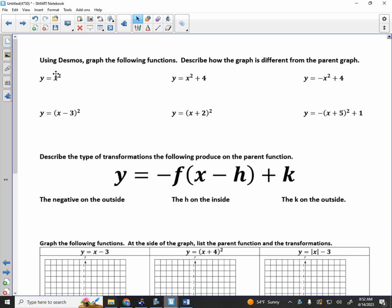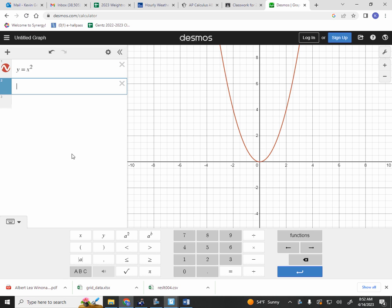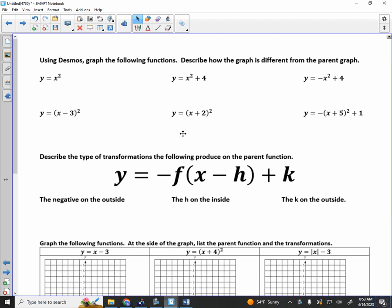What we want to do is we're going to graph x squared. I'm going to graph that first, y equals x squared. Then I'm going to graph the next one. Raleigh, what does the next one say? Y equals x squared plus 4. So somebody tell me, how is x squared plus 4, how is the blue function different than the red function? Just shifted up 4 units. Under x squared plus 4, I just want you to write up 4.